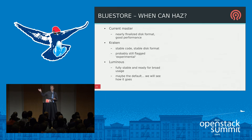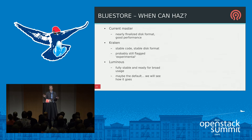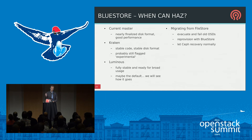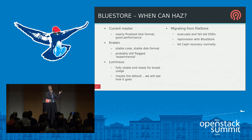We hope to make BlueStore the default in Luminous instead of FileStore, but that depends on how the next six months go — data integrity is more important than getting a feature out the door quickly. Migrating from FileStore is straightforward: take existing FileStore OSDs, evacuate or kill them, reprovision the same storage devices as BlueStore, and let normal cluster recovery take over.